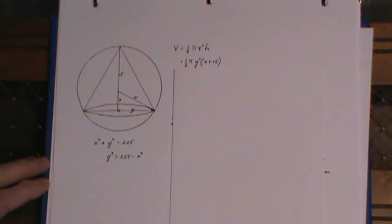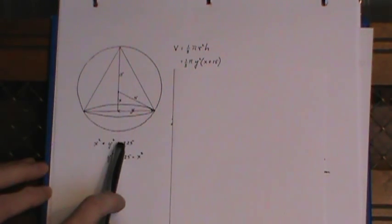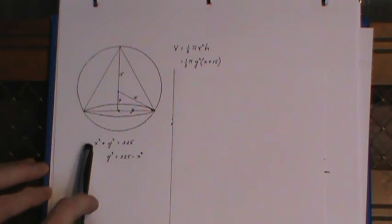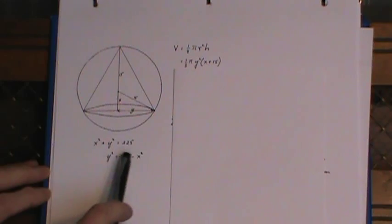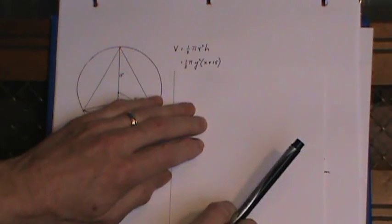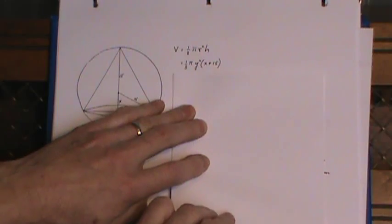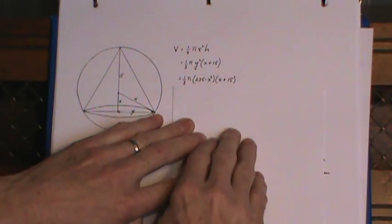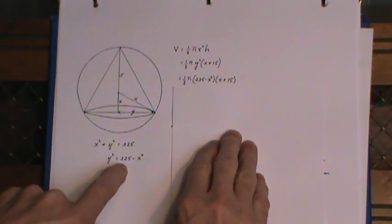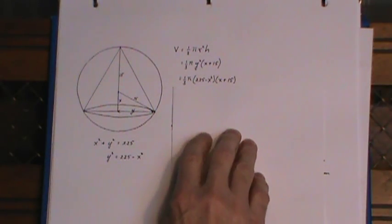Now I have to get this in terms of one variable so I come down here easy Pythagorean relationship x squared plus y squared equals 15 squared. If I bring the x squared to the other side I have a replacement for y squared. So in this expression up here in place of the y squared I'm putting in 225 minus x squared. So now I've got it all in terms of one variable.